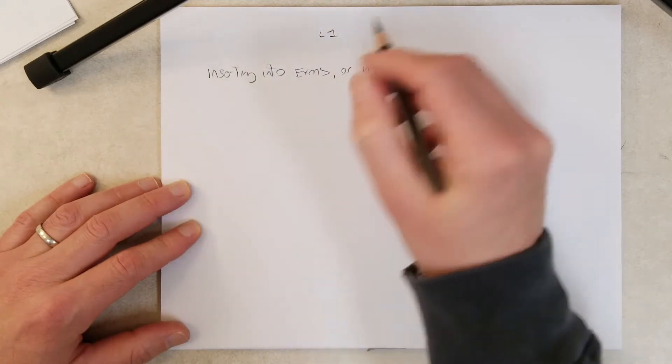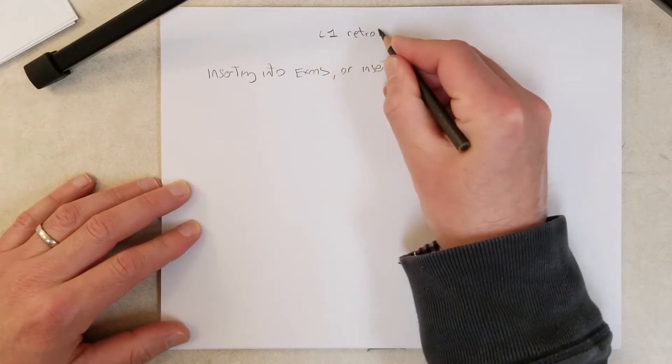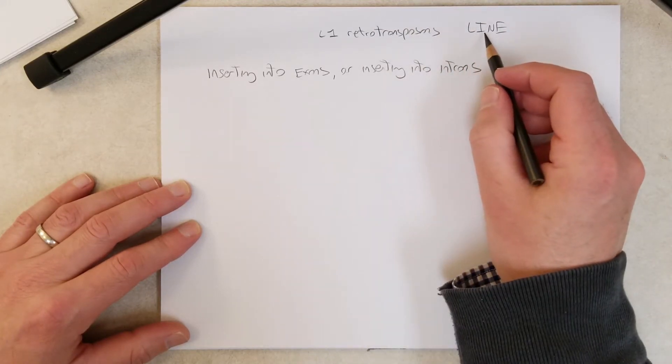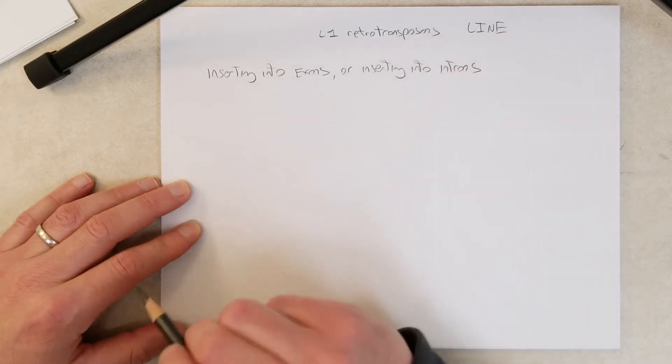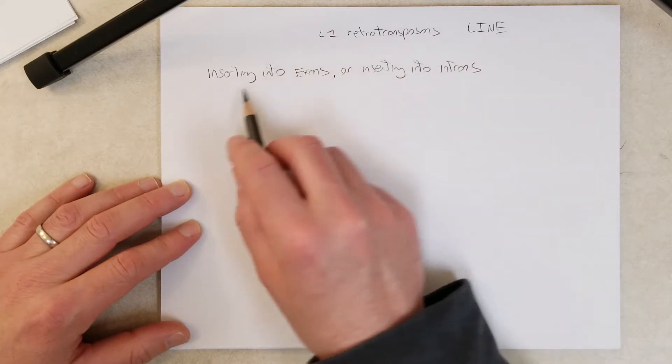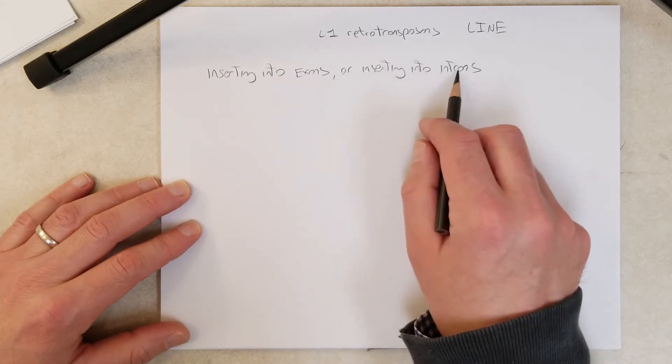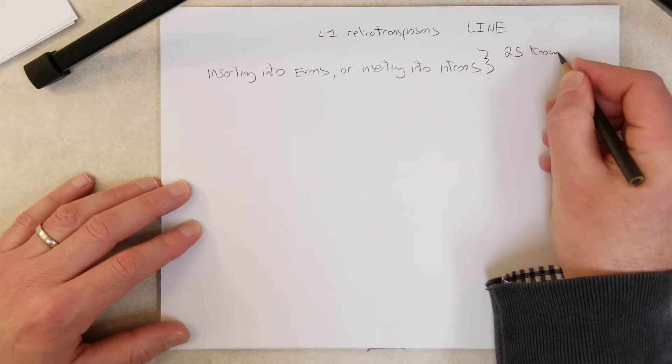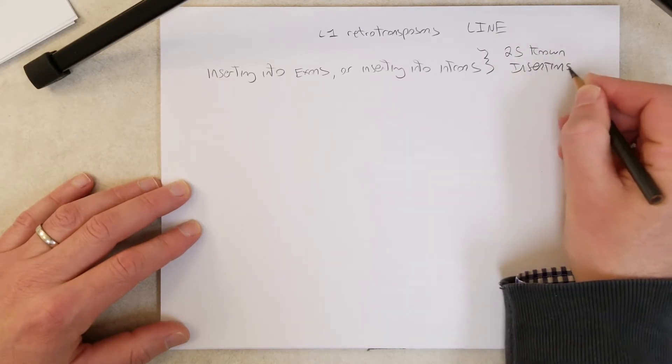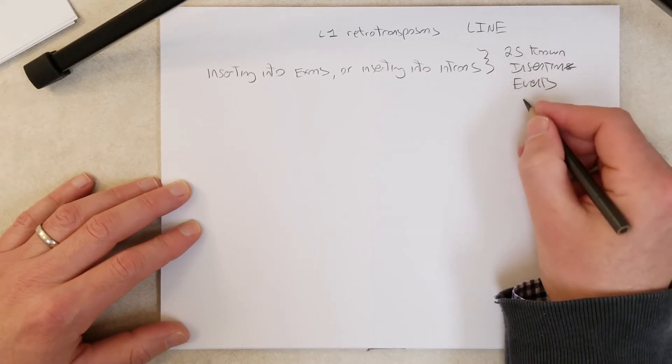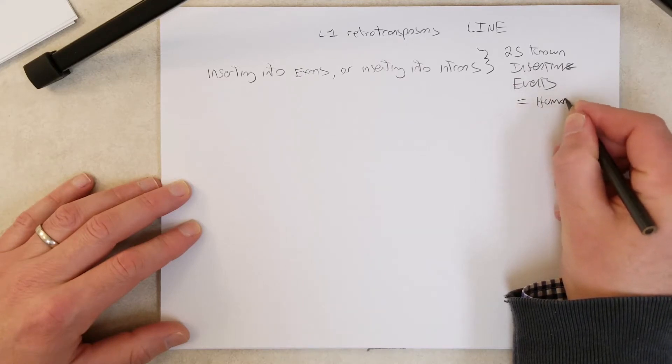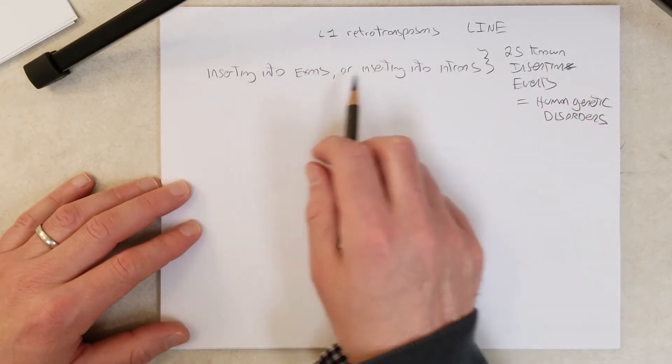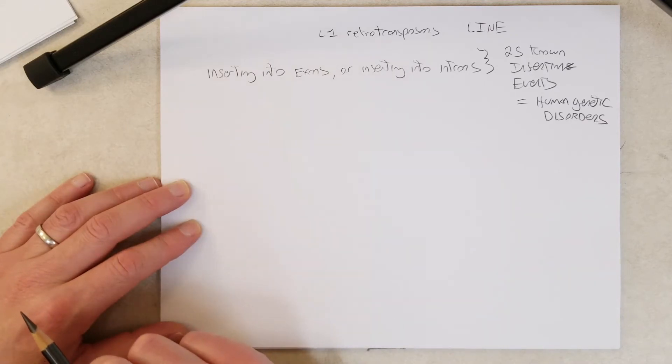So back up a bit, just in case you didn't watch the previous video, we are talking about L1 retrotransposons. In humans, these are a type of LINE, long-interspersed element. They can cause mutations by inserting into exons or inserting into introns, so they can cause mutations in other ways, but there are at least 25 known L1 insertion events that have led to human disease or human genetic disorders.